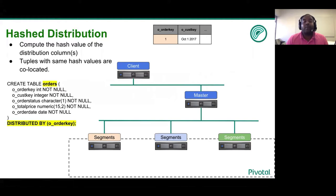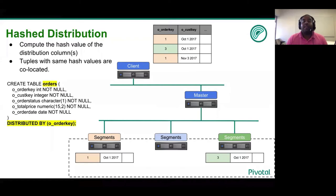So if your distribution policy is on order key, this tuple of order key with order one is placed on segment one. Now the second tuple has order key three and is placed on the third segment because the order key value is three. The third tuple has the order key one. And since our distribution policy is on order key, all orders of value one will be placed in segment one. So therefore this third tuple is now placed on segment one.